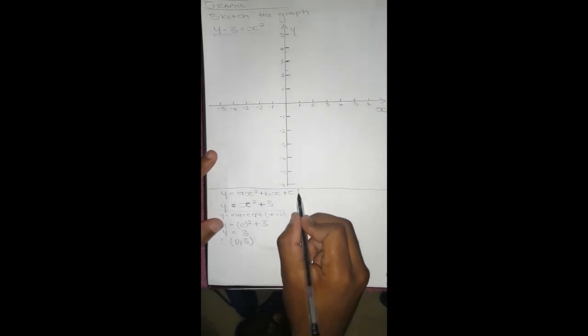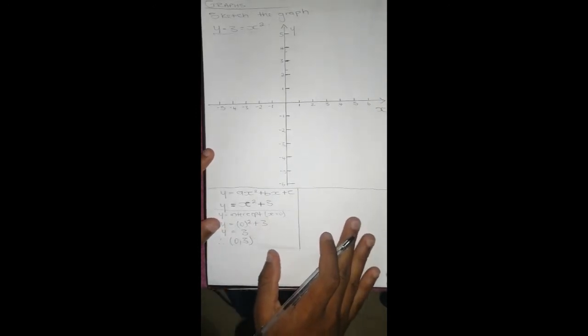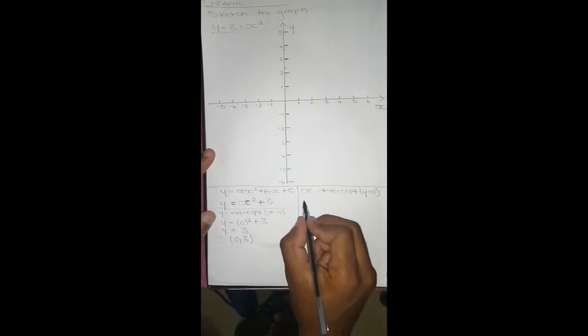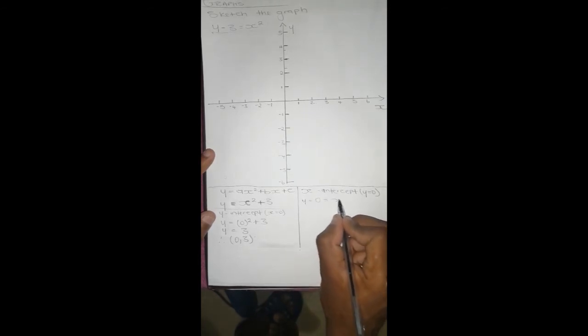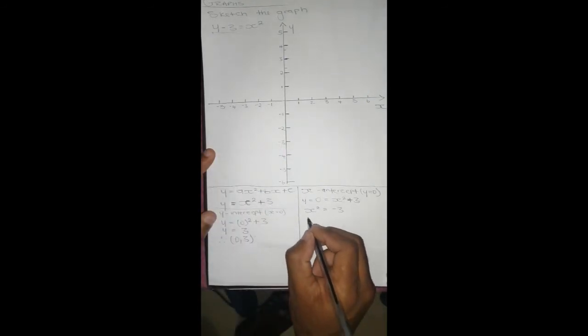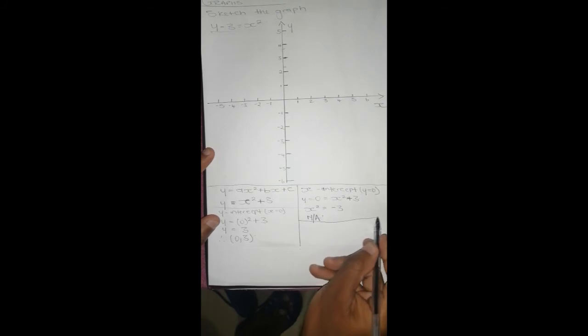We are going to calculate the x-intercept. To calculate the x-intercept, y equals zero. When y equals zero, we are going to have zero equals x squared plus 3. Trying to solve for x, we're going to have x squared equals negative 3. If you check this, we cannot solve this especially when it comes to graphs, so it's not applicable. Our graph doesn't touch the x-axis.